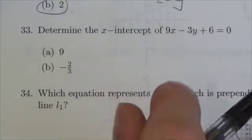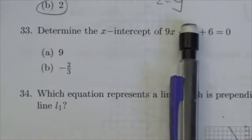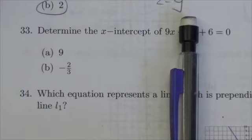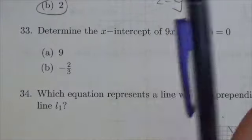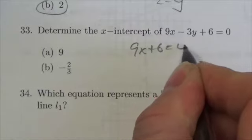So if I make y equal to zero here, this term essentially disappears from the equation and we're left with 9x plus 6 equals zero.